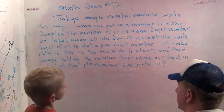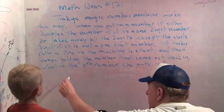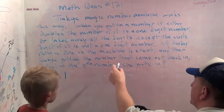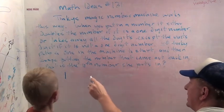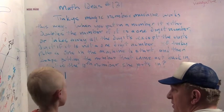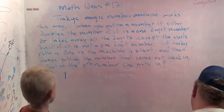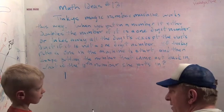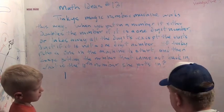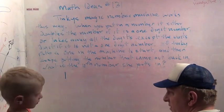If Tinky puts a one in the machine to start, and then keeps putting the number that comes out back into the machine, what is the tenth number she puts in? So she's going to put a one in, then something's going to come out, and then she's going to put that into the machine, something's going to come out, she's going to keep running in a circle.